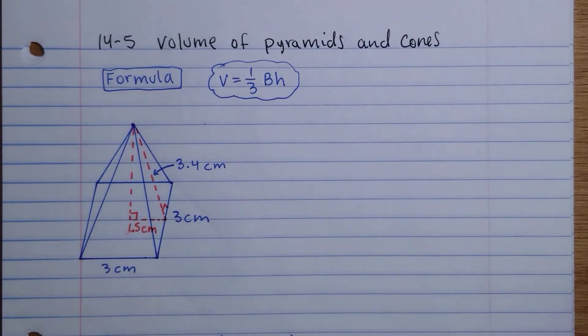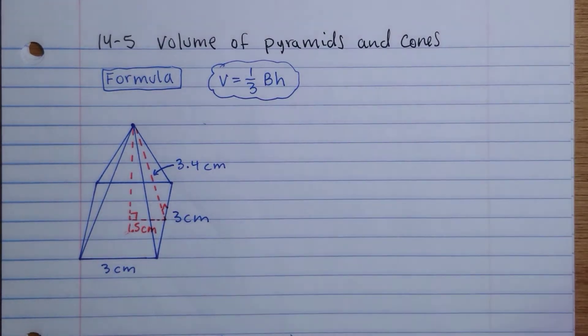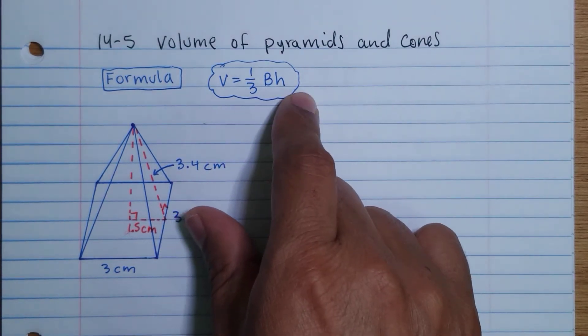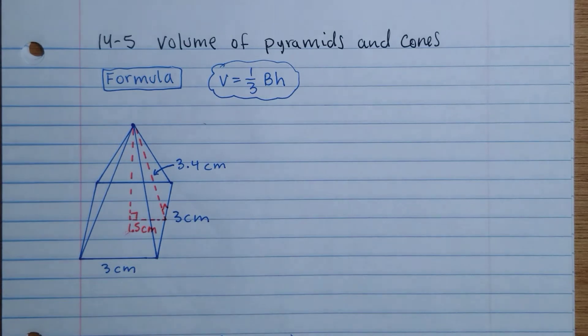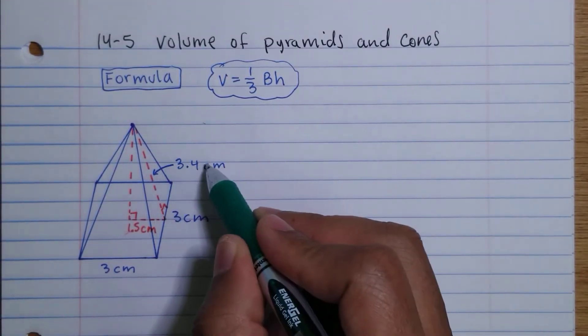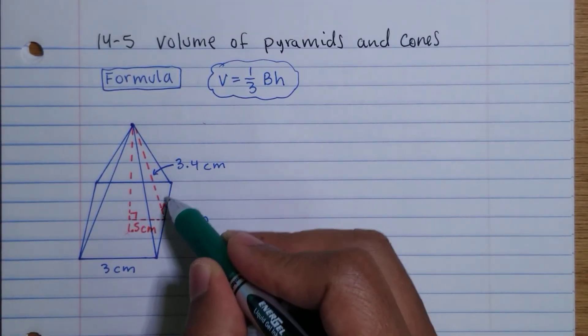The formula to find the area of pyramids and cones is the same: V = 1/3 times the base times the height. For this example here, notice that we're given the slant height, each side of the base is 3 units, and this segment is half of the side.